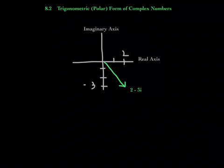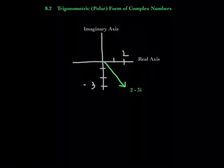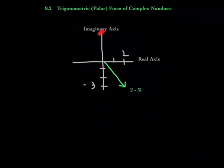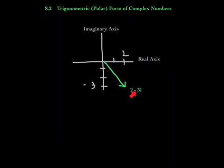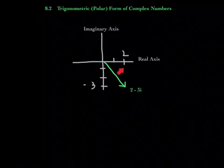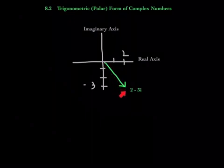In order to graph our complex numbers, we have to adjust our plane so that the vertical axis is the imaginary axis and the horizontal axis is the real axis. For example, the complex number 2 minus 3i: 2 is your real part, negative 3 is the imaginary part, so you graph it by finding 2 on the real axis and negative 3 on the imaginary axis. This is the complex number graphed in the complex plane.